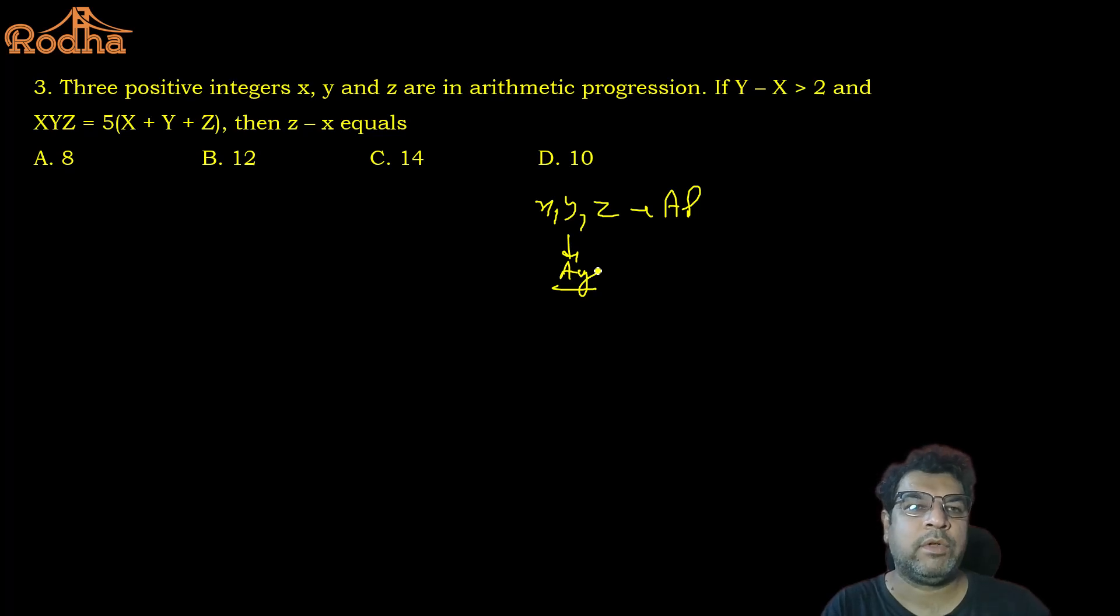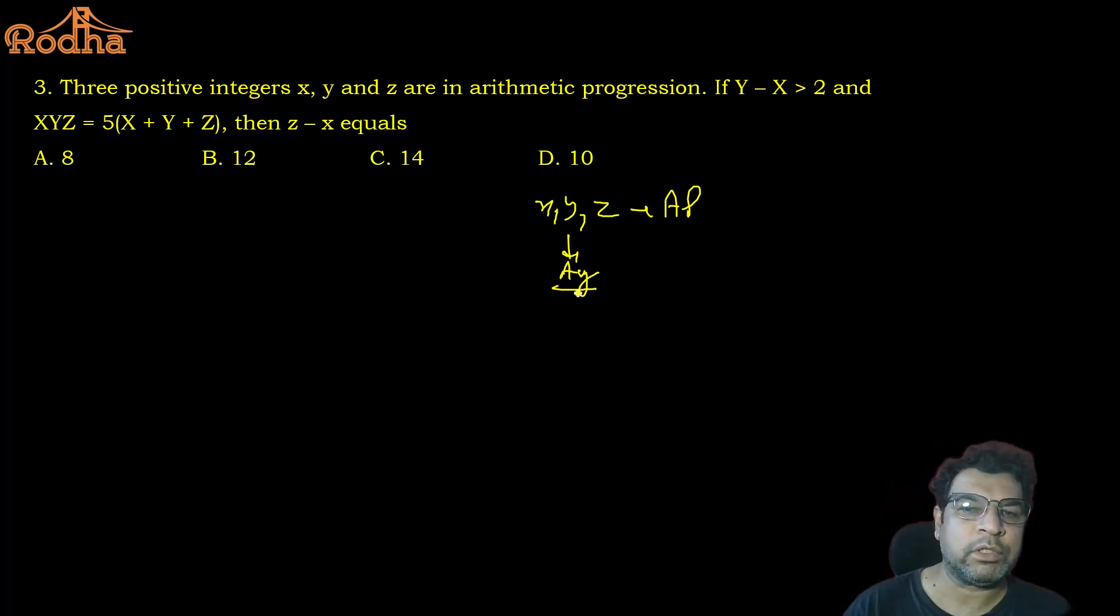Average of AP is always equal to the middle term. So sum will be what? Three times the average. So can I straightaway say this is nothing but 3y? So straightaway I get xyz equals 15y. Y is cancelled, xz equals 15. And x, y, z are positive integers. What are the possibilities? 1 times 15 and 3 times 5. You need to find z minus x. Here z minus x is 14. Here z minus x is 2. 2 is not in the options, it's ruled out.